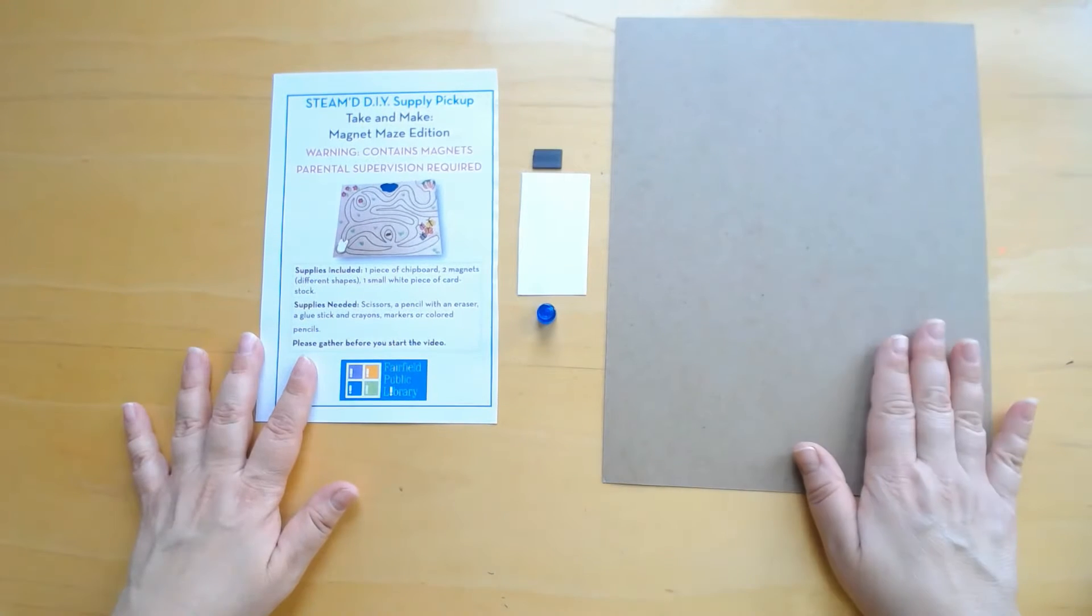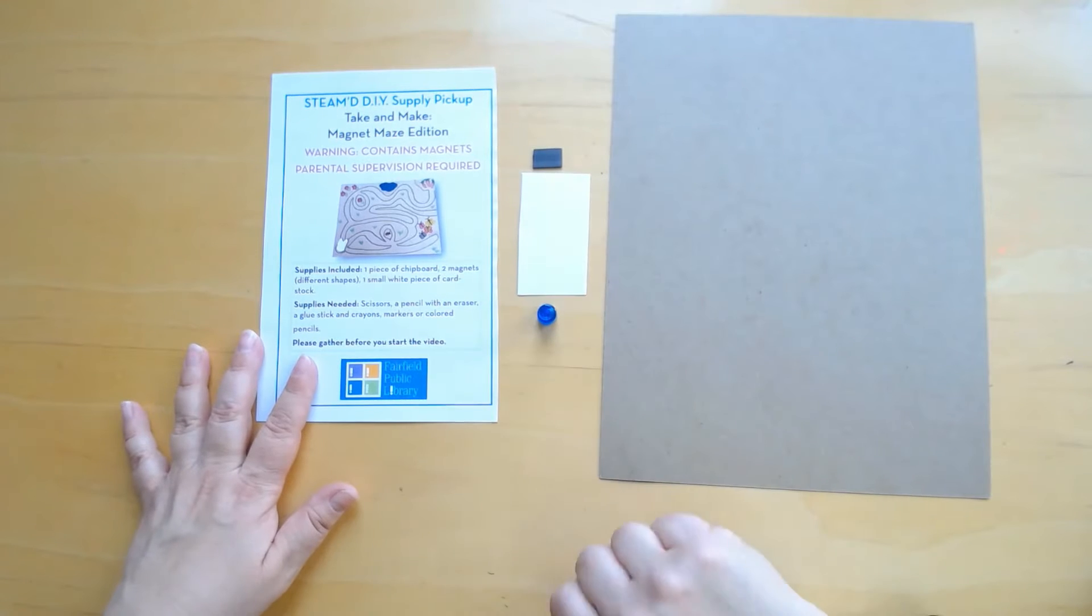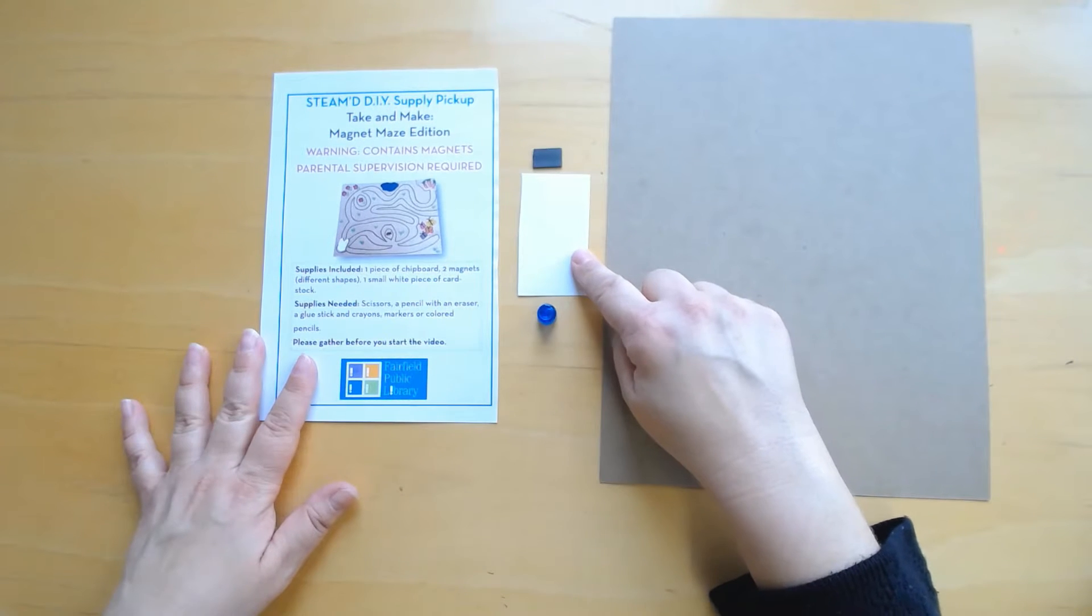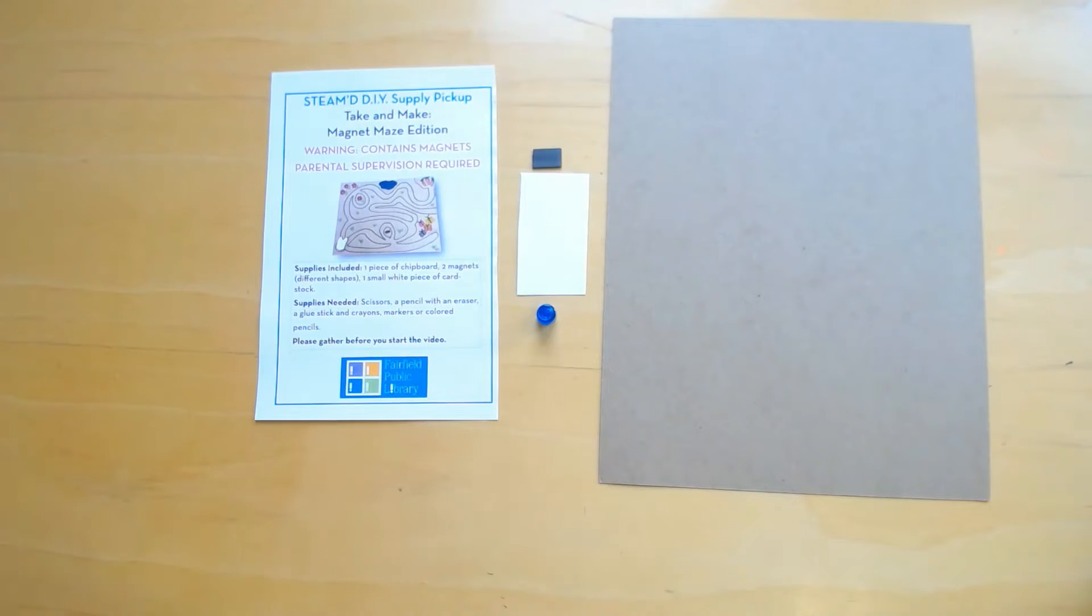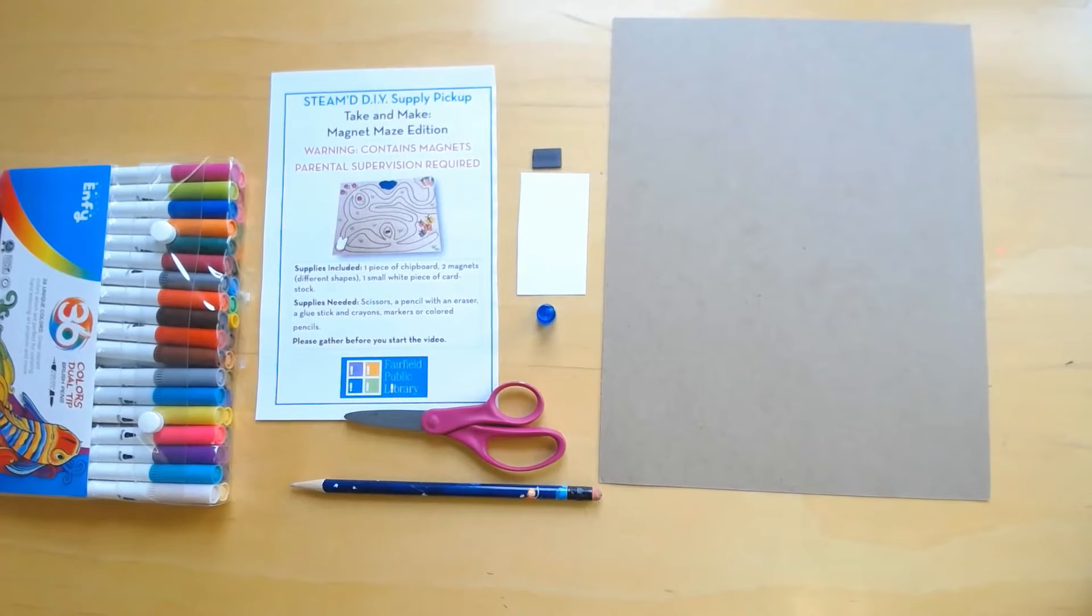Friends, in your envelope you have a piece of chipboard, two magnets with different shapes and colors, one small piece of cardstock, and what you'll need are scissors, a pencil with an eraser, and markers or crayons or something that you like to color with.